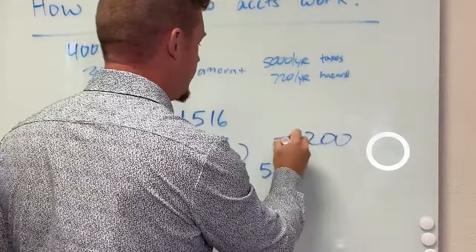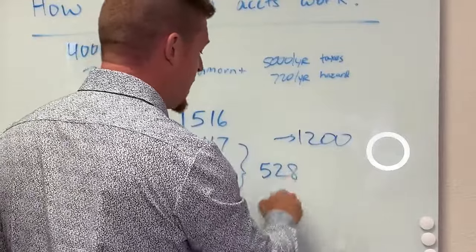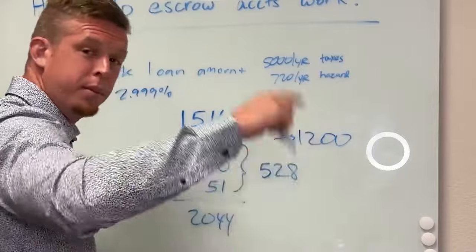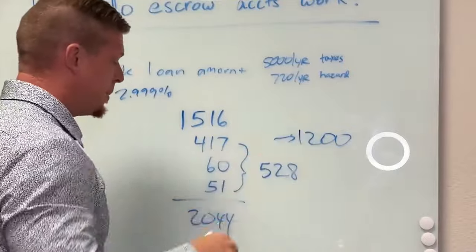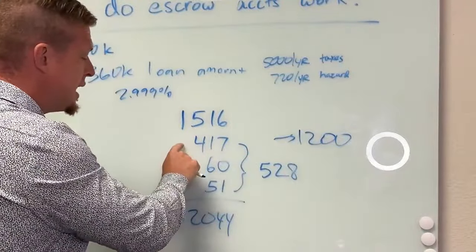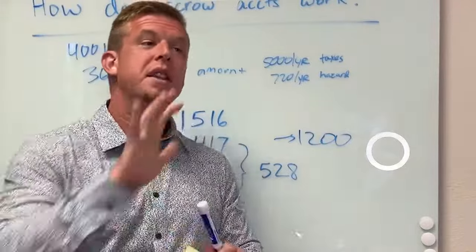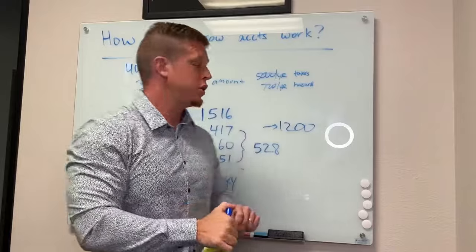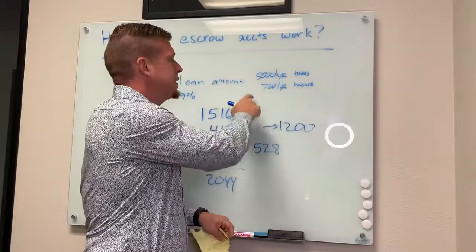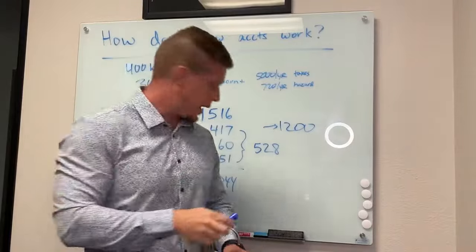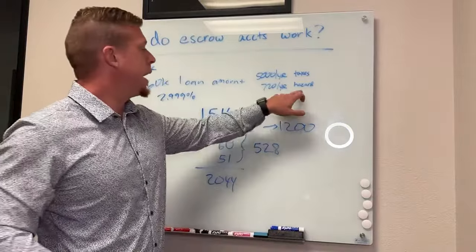I think I said $3,700 to start. And $528 a month keeps plopping back in. $51 a month paid to mortgage insurance. So it goes down by that amount. But these $417 and $60 per month are basically collecting in the savings account that's yours. And then they get paid, they get dispersed to the county for taxes and to State Farm or whoever's got your hazard insurance.